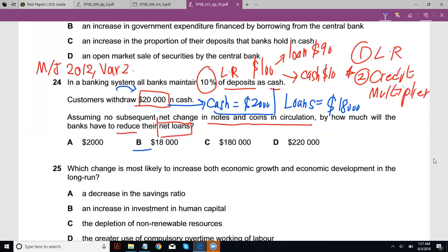Which might give you an answer of B, but that answer is incorrect. The reason for that is you forgot to take into account the credit multiplier. Now the credit multiplier, or the money multiplier, is basically one upon your liquidity ratio. So that would be 1 / 10%, which should give you 1 / (10/100), which would give you 10.